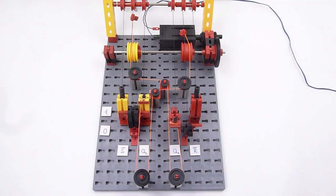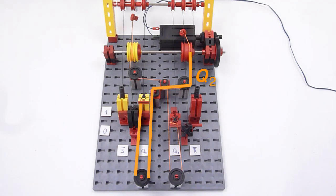This flip-flop consists of two NAND gates. The output Q1 of the left gate is connected to the left input of the right gate. The output Q2 of the right gate is connected to the right input of the left gate.